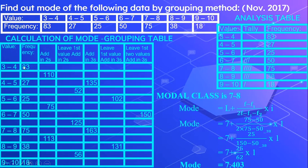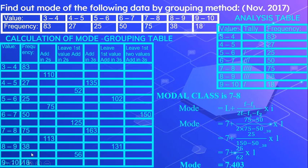Next, we leave the first frequency and add in 2s. So we leave out 83 and add in 2s: 27 plus 25 gives 52; 50 plus 75 gives 125; 38 plus 18 gives 56.